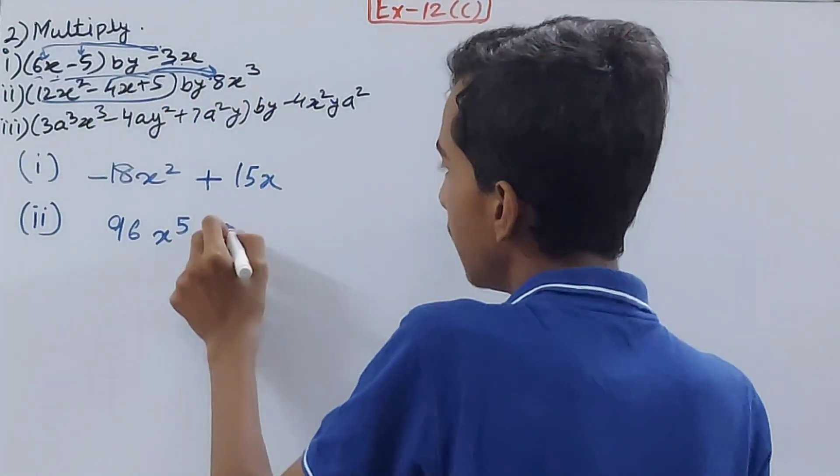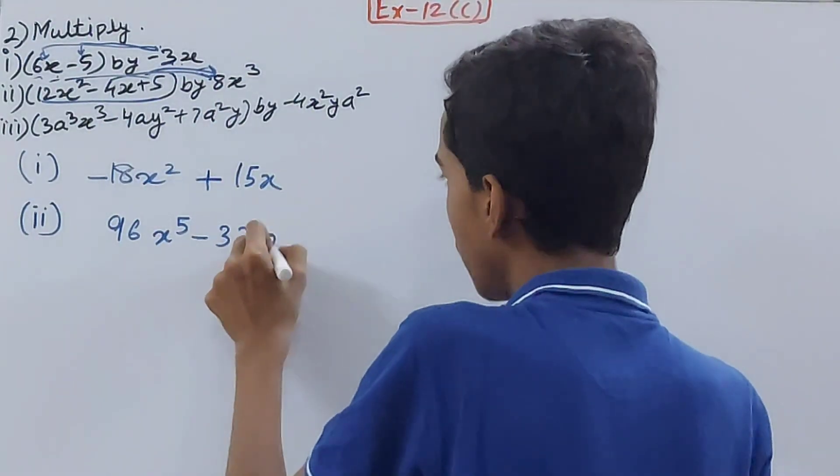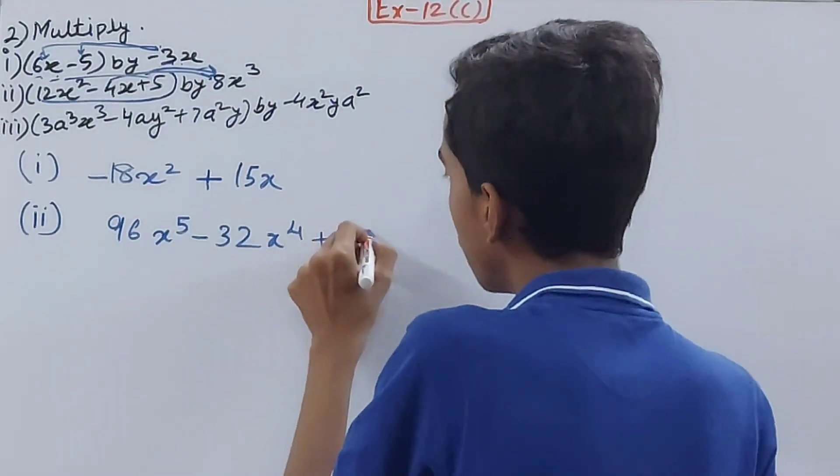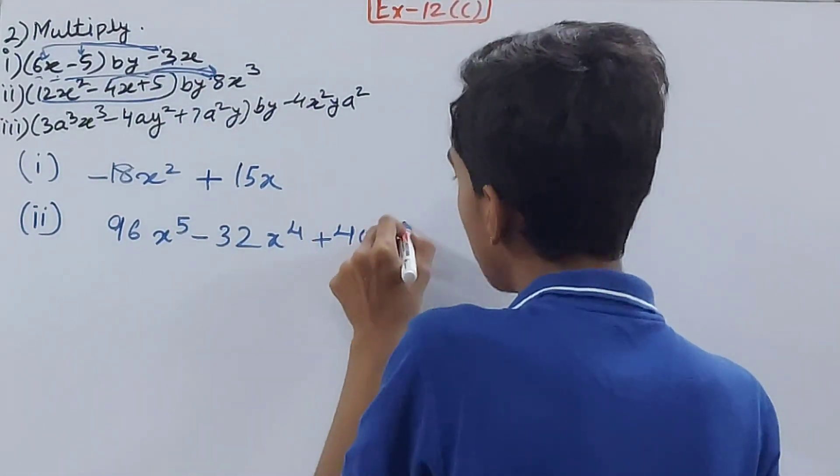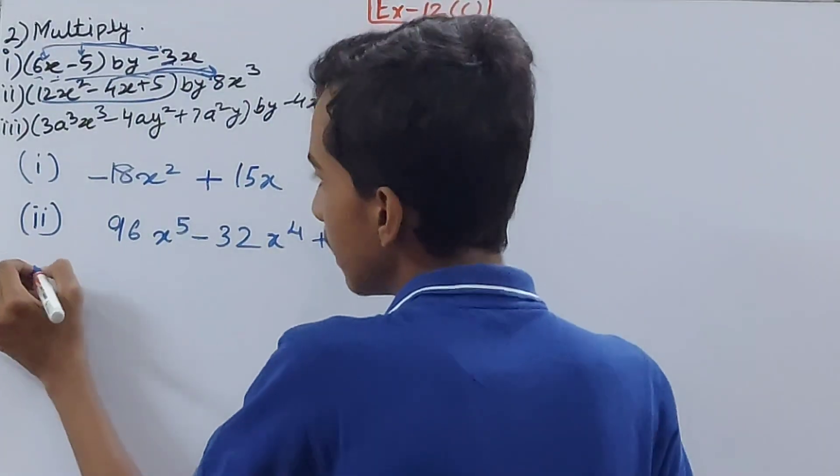Then plus 5 times 8x³, so plus 40x³. That becomes the answer.